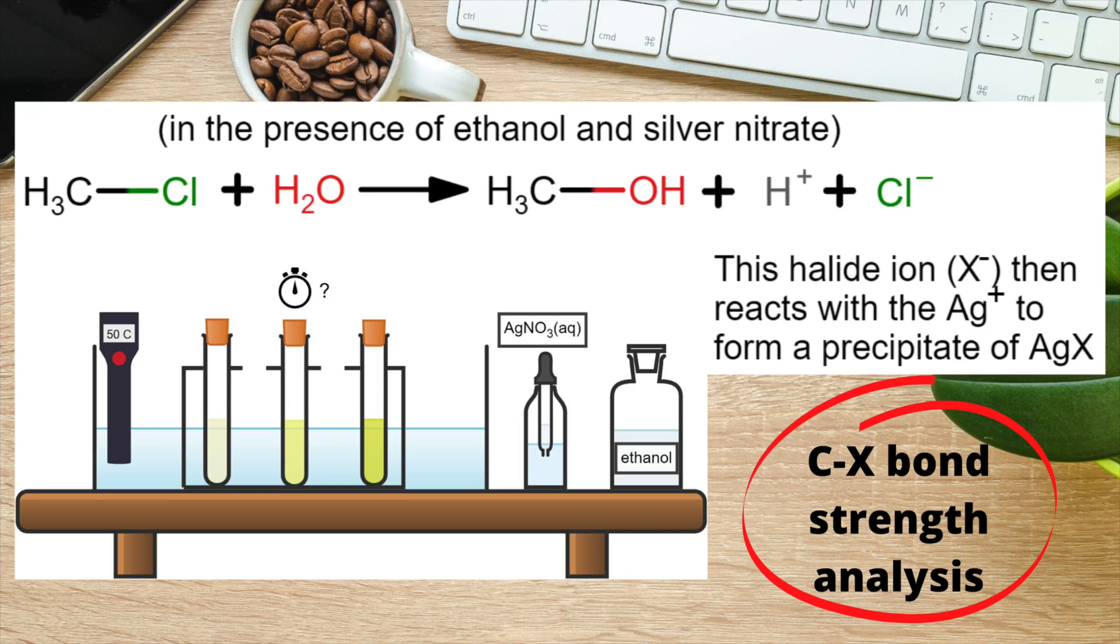This slide is all about how we can perform an experiment to investigate the carbon halogen bond strengths. The reaction at the top of the screen is an example of the hydrolysis of a haloalkane in a substitution reaction which uses water. Along with the water and the haloalkane, you would also have some aqueous silver nitrate and some ethanol present. The silver nitrate provides us with Ag+ ions, which then react with the halide ion kicked out by the reaction. In this example, you can see a chloride ion Cl- in the products, which is released from the chloromethane reactant, and this chloride ion will form a white silver chloride precipitate when it reacts with the Ag+.